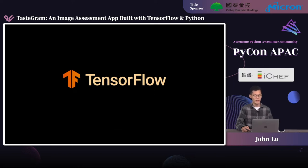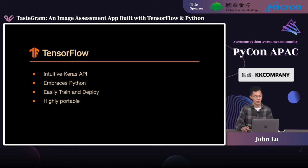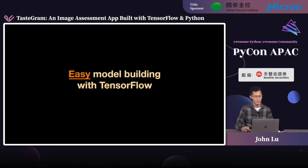So if you haven't heard about it, TensorFlow is an end-to-end open source machine learning platform. It offers an intuitive high-level Keras APIs for building your models easily and quickly. It provides stable Python APIs and embraces the style and ergonomics of the Python language. It allows you to train and deploy your models easily. It's designed to be highly portable, running on a variety of devices and platforms. TensorFlow 2.9 has been released at the time of this recording, ready for you to try out new and improved features.